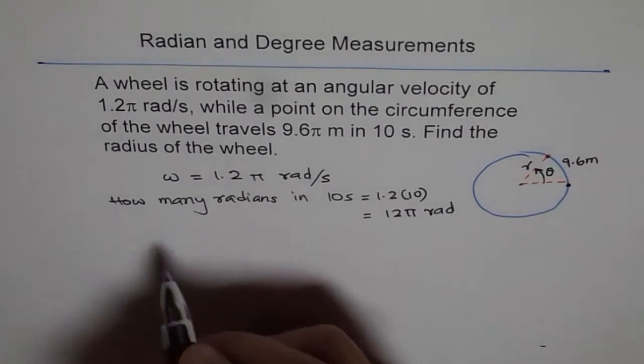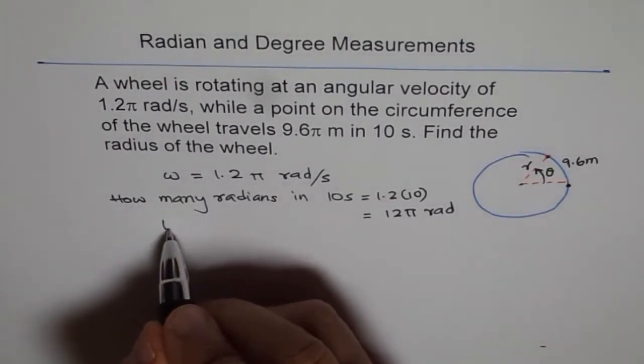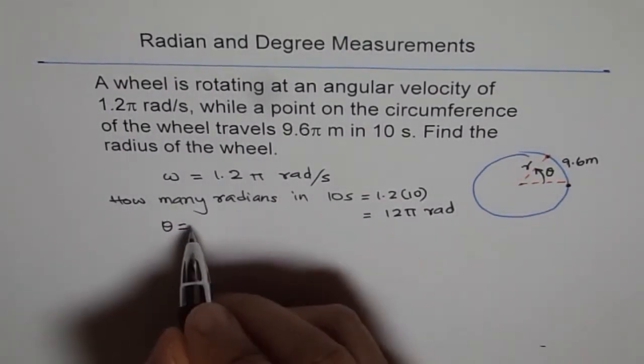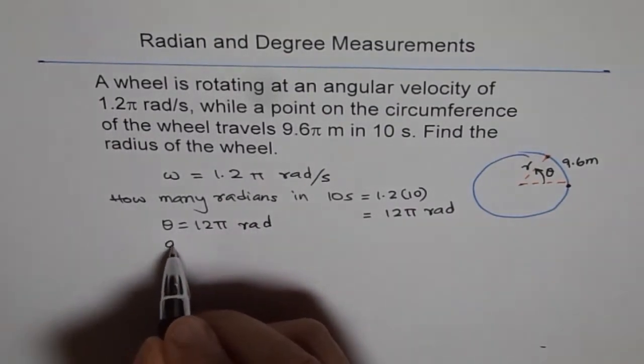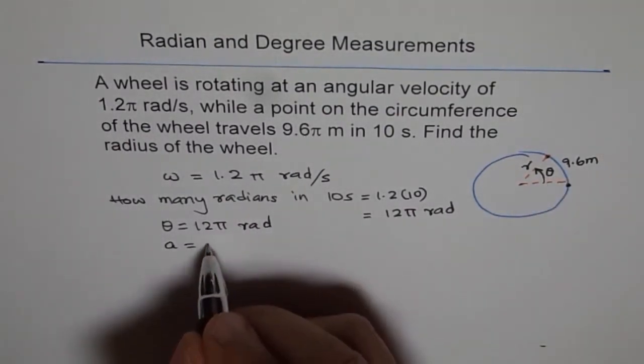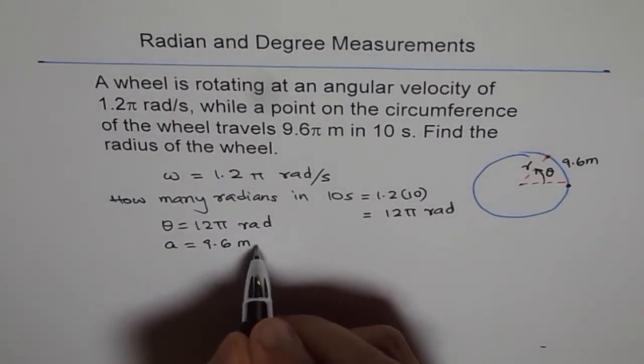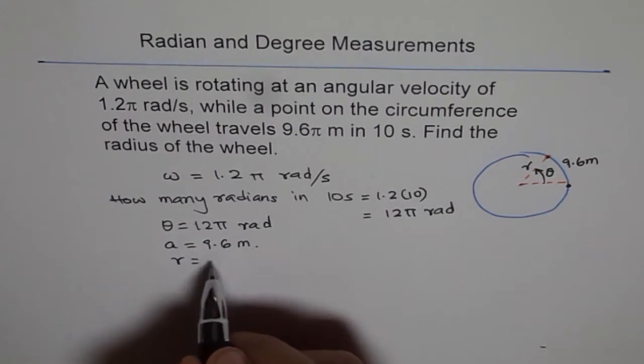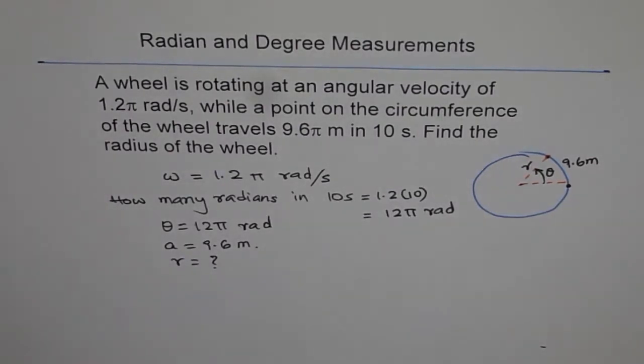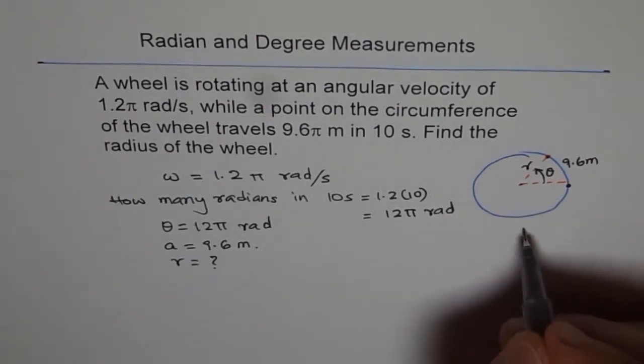And this is A. So what we know is theta equals 12π radians, and the arc length is 9.6 meters. And what do we need to find? Find the radius. We need to find radius.